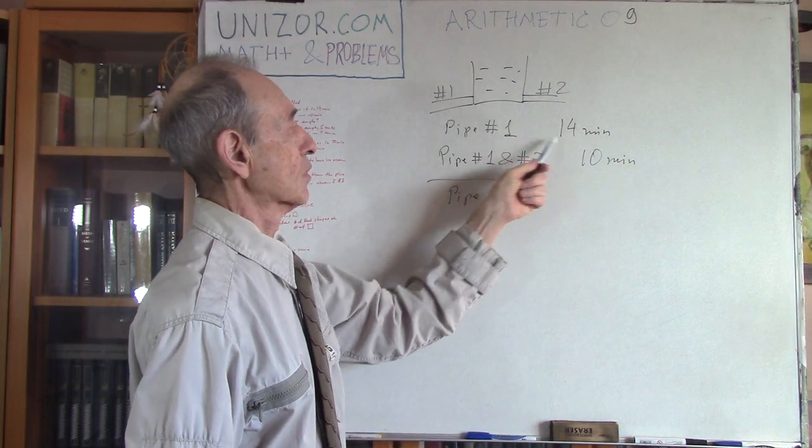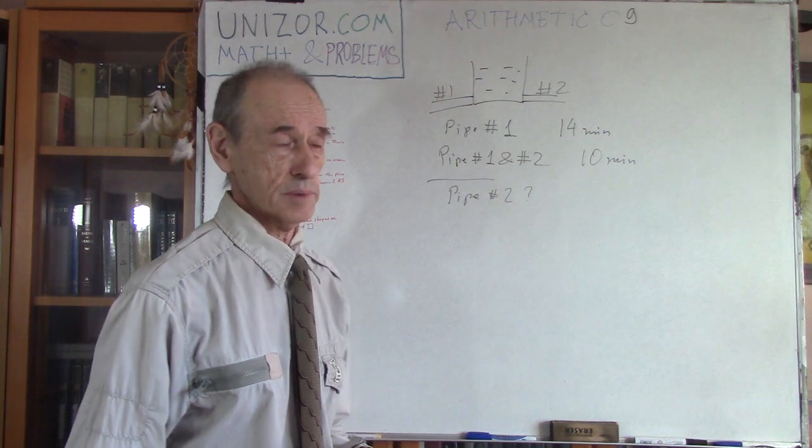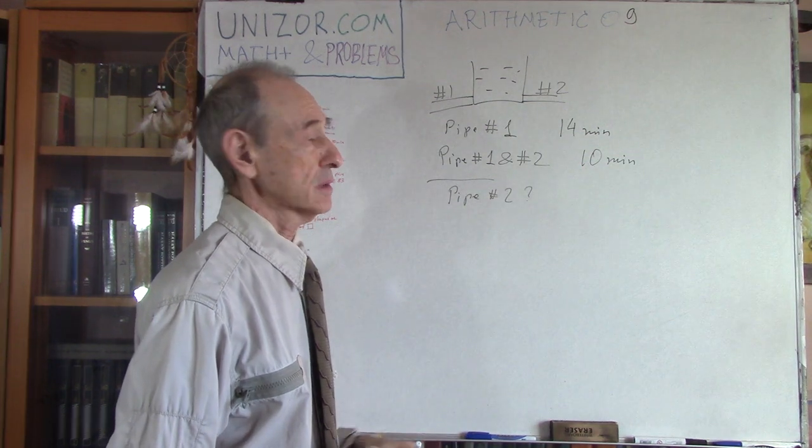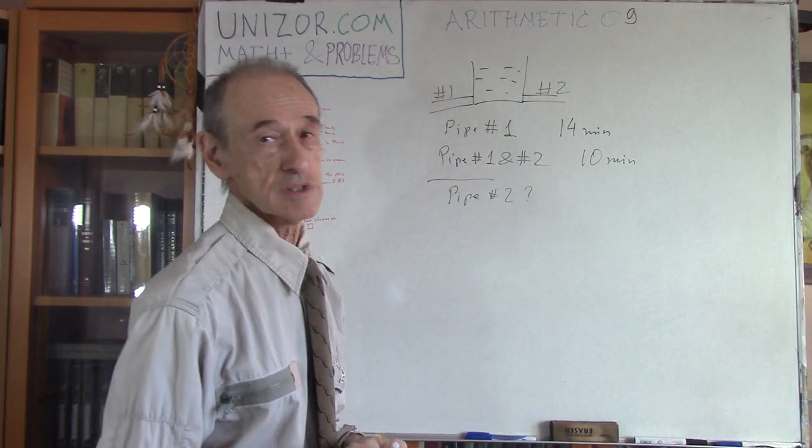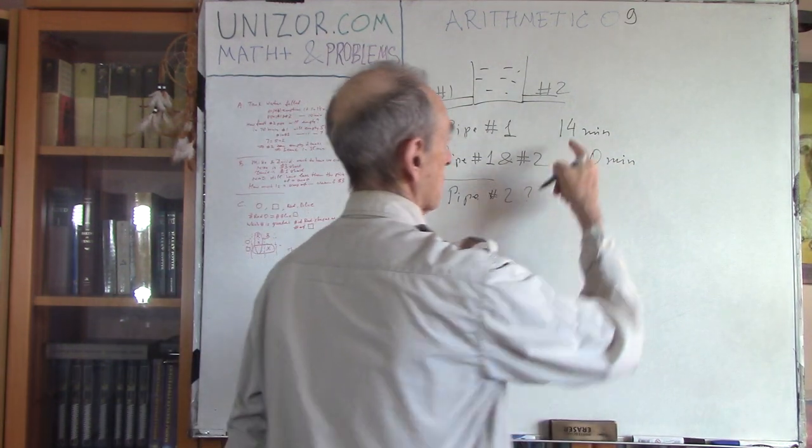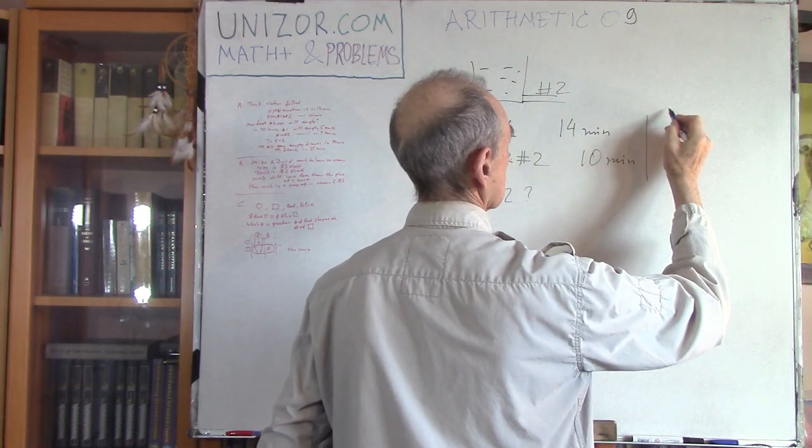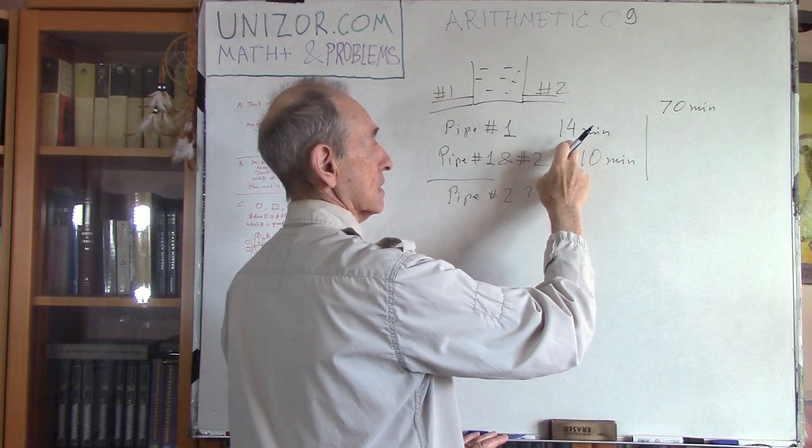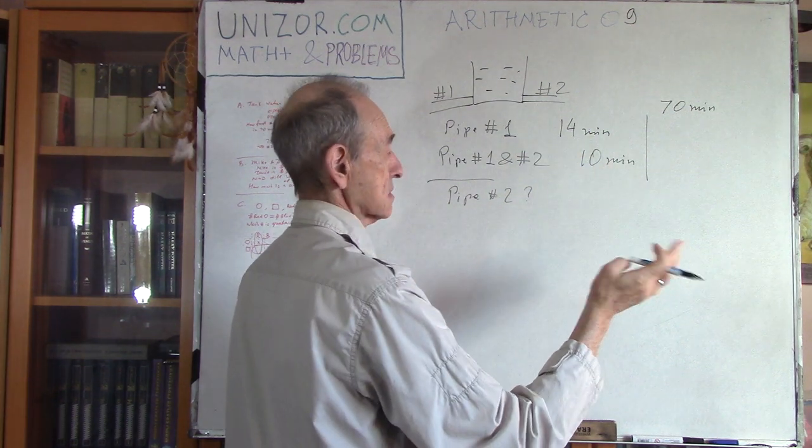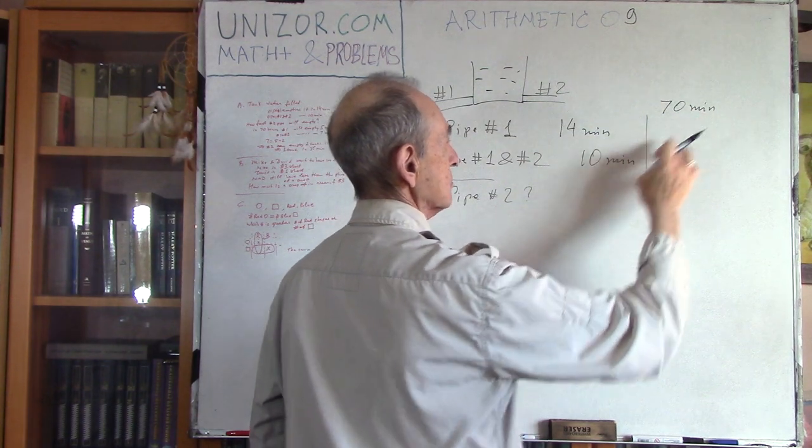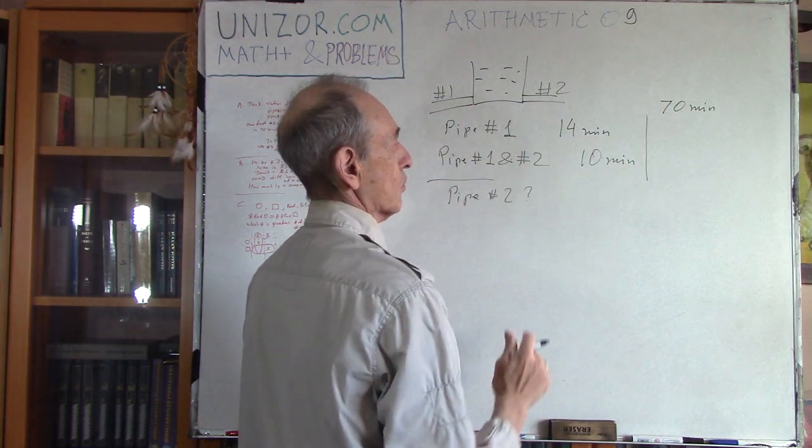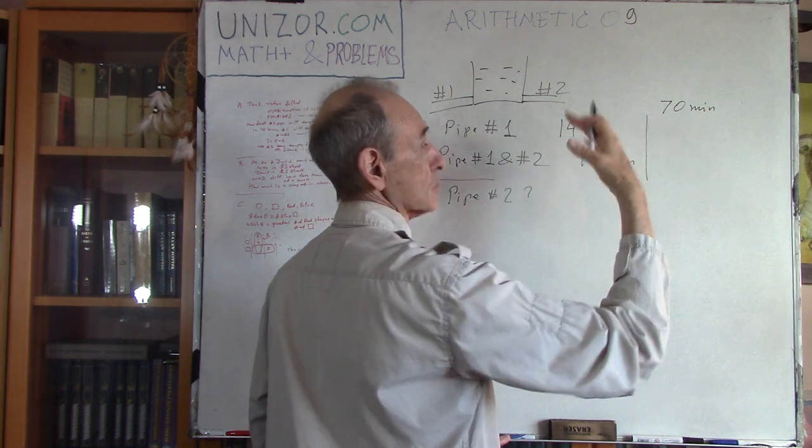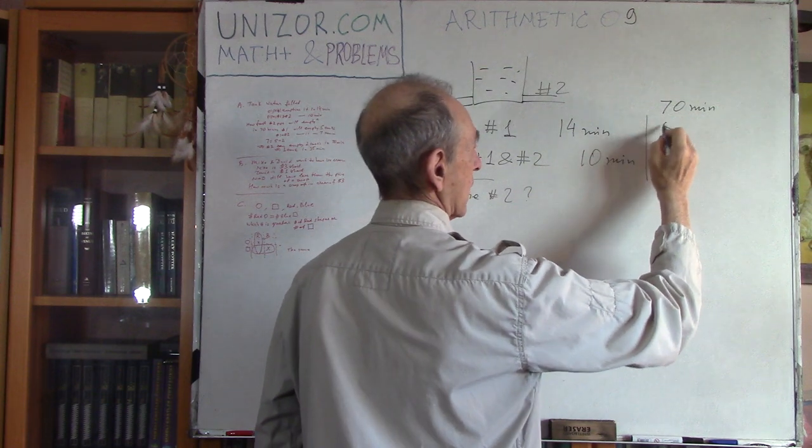Think about it this way. The pipe number one can empty the tank in 14 minutes and two pipes in 10 minutes. Let's have some kind of a common number which is divisible by both, by 14 and by 10. Let's talk about 70 minutes. It's divisible by 14, it's 5, and divisible by 10, it's 7.